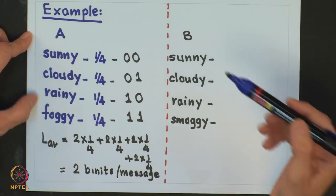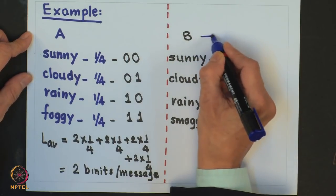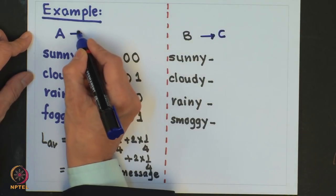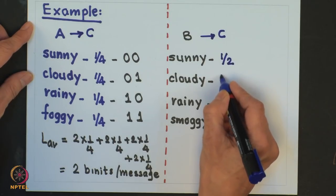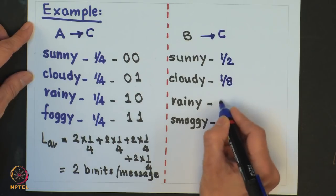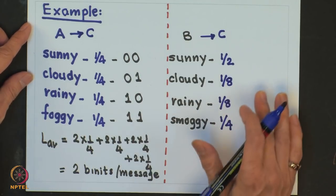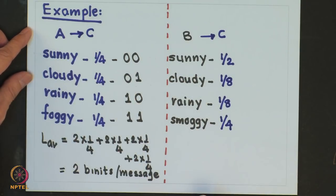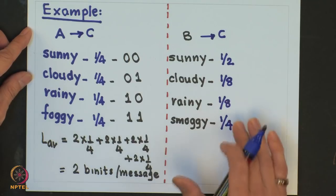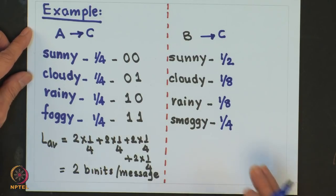Now let us take the case of message transmission from city B to city C. Assume that the probability of occurrence of the weather is: sunny is one-half, cloudy is one-eighth, rainy is one-eighth, and smoggy is one-fourth. In principle I could have used the same labeling as for A to C — assigning 00, 01, 10, 11 — but if I do that, the average length would again turn out to be 2 binets per message.